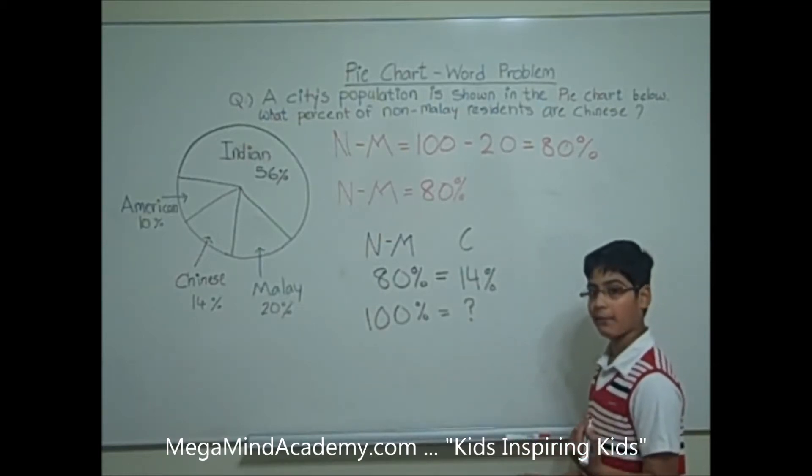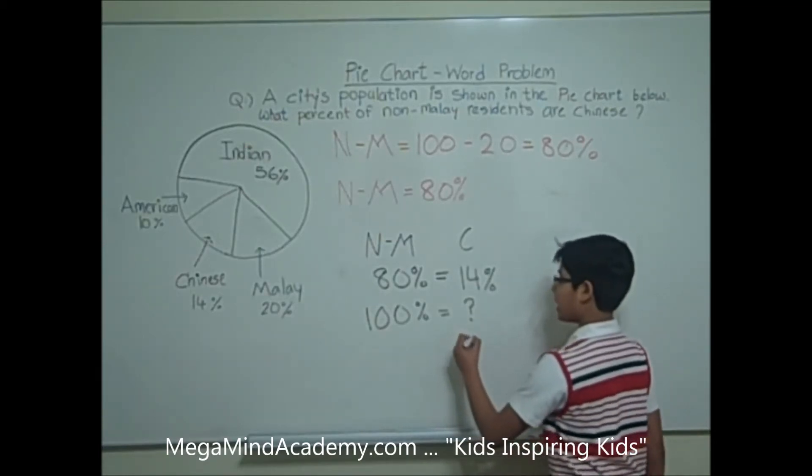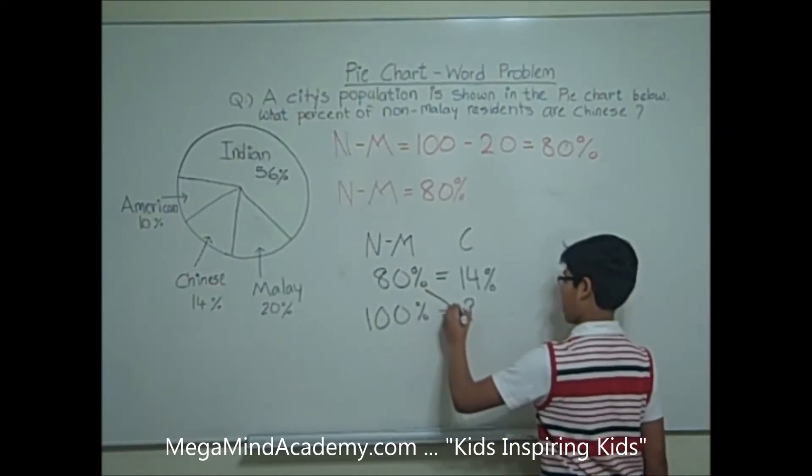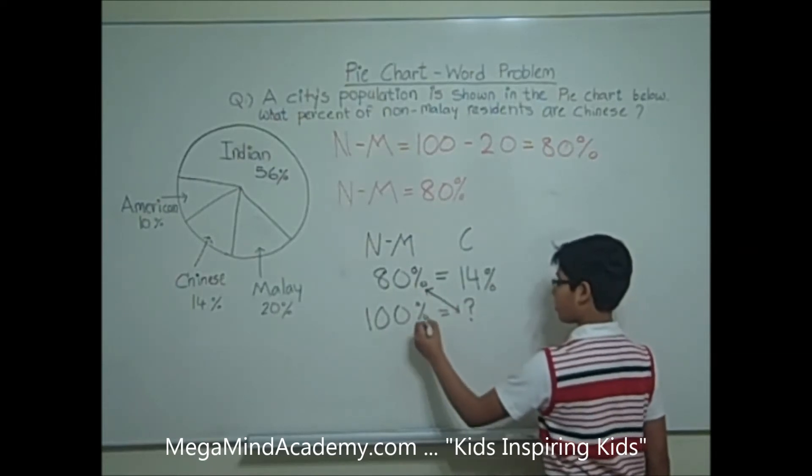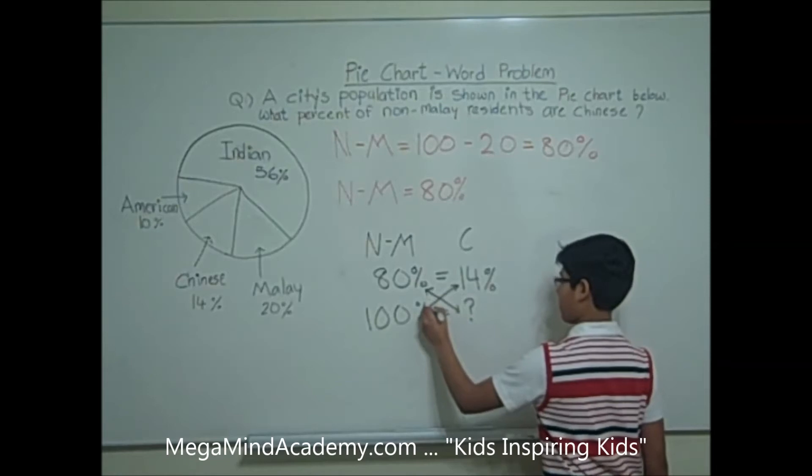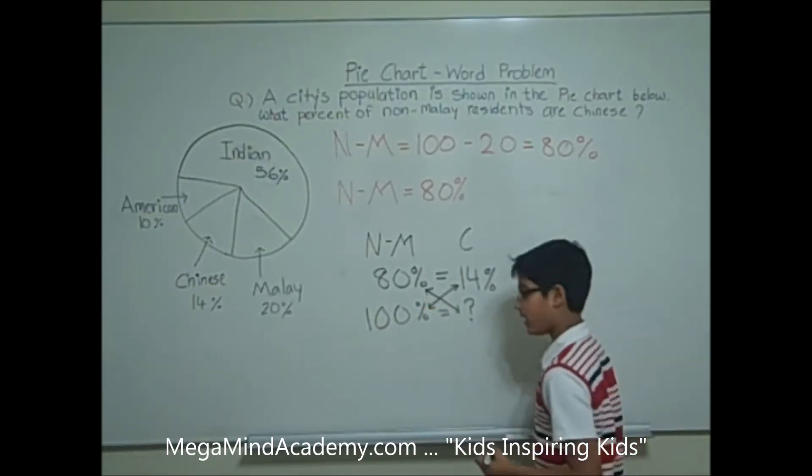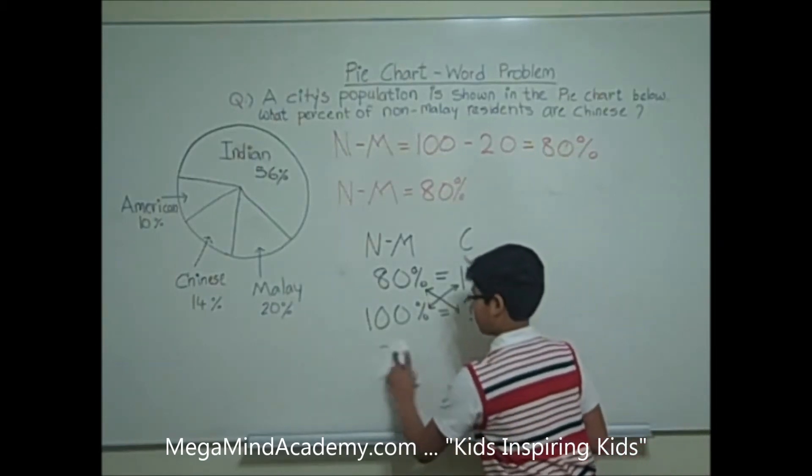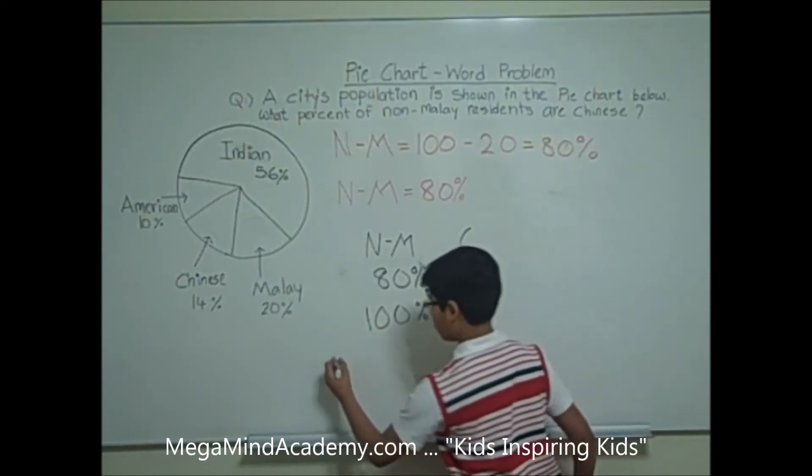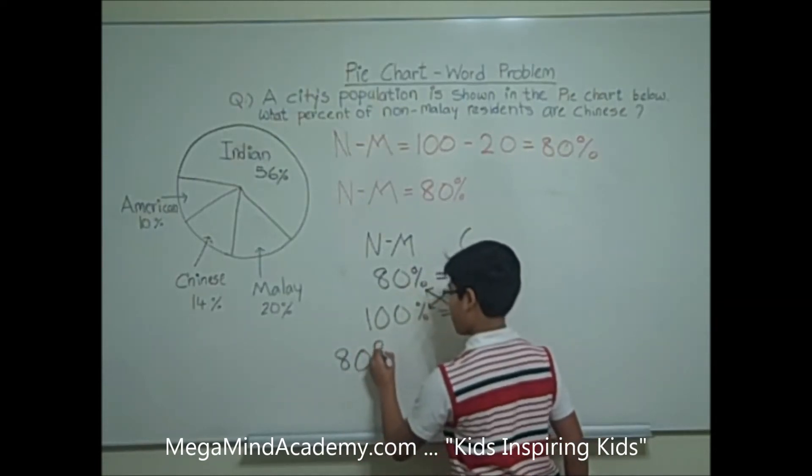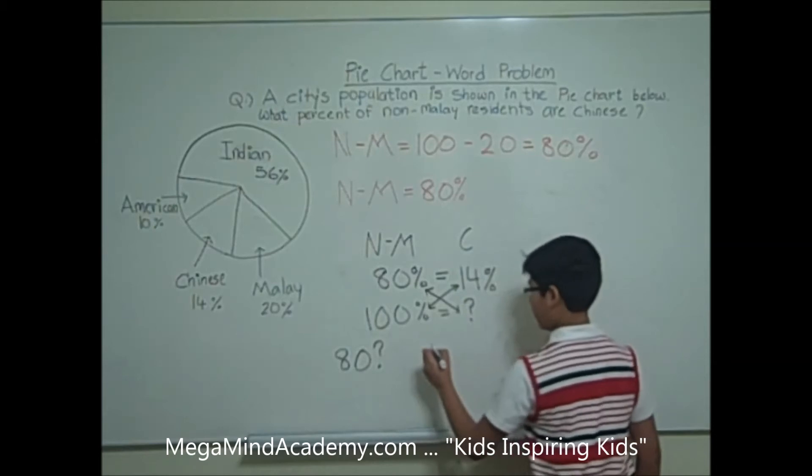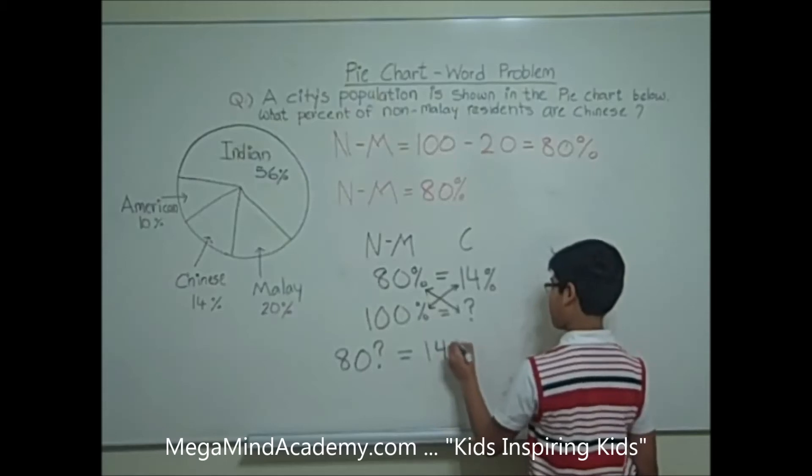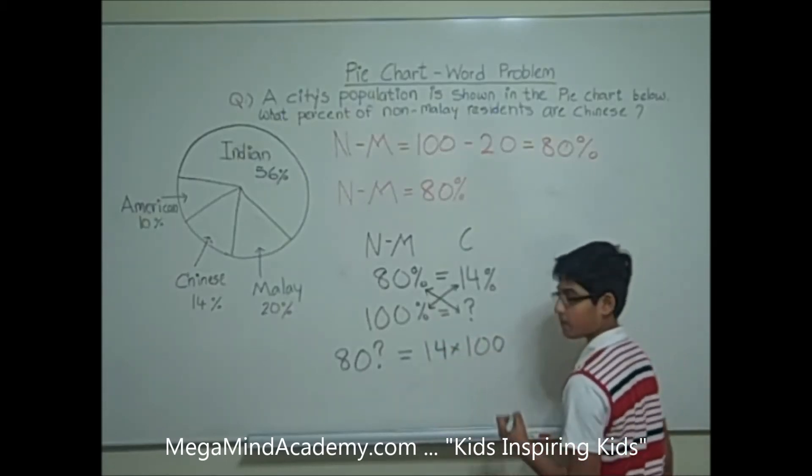To solve this part of the problem, we have to use cross multiplication. That means we multiply 80% with the unknown and 100% with 14%. So, we get 80 × ? = 14 × 100.